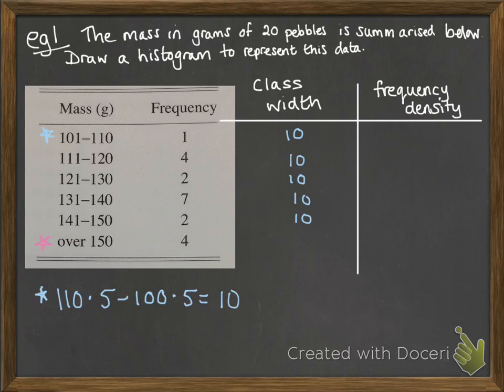Now when we get to this over 150 one, the standard practice there, because we don't have an upper limit, we make it twice the previous width. So that one would be 20.